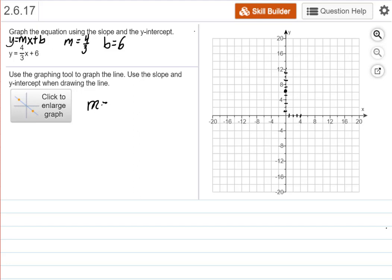M equals 4 thirds. The top number is the rise, the vertical movement. And the bottom number is the run, movement in the horizontal direction.